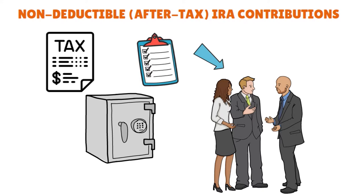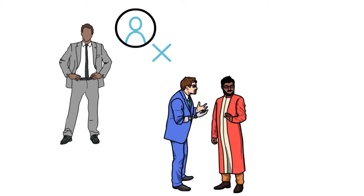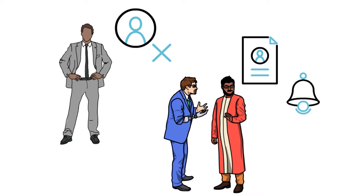Let's talk about traditional IRA contributions and rollover of after-tax assets from qualified plans. If a taxpayer does not claim a deduction for their traditional IRA contribution, it's usually either because he or she is not eligible or because he or she simply prefers not to do so. An individual who is eligible for the deduction may decide not to claim it if the nature of the future distribution is not good for their tax situation. Regardless, the taxpayer must file IRS Form 8606 to notify the IRS that the contribution is non-deductible — in other words, it's counted as an after-tax asset.